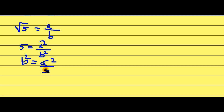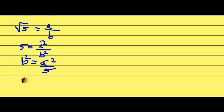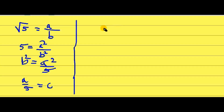So what does it mean? It means that if you divide a² by 5 you will get b². This means a² is divisible by 5. If a² is divisible by 5, then 5 is the factor of a². Similarly, a is also divisible by 5. Therefore we can write a = 5c.